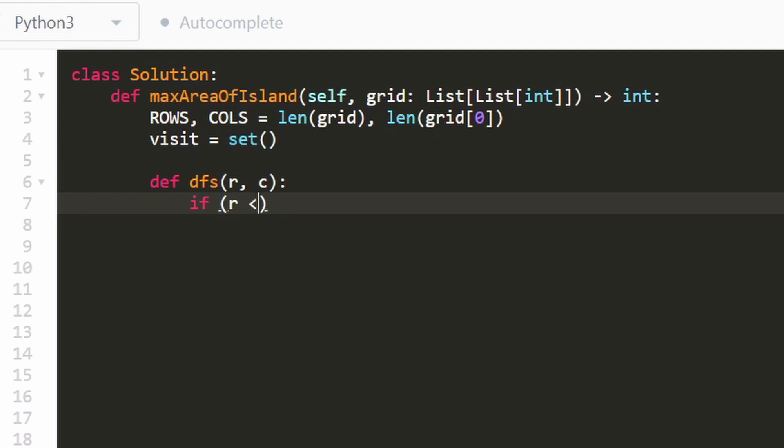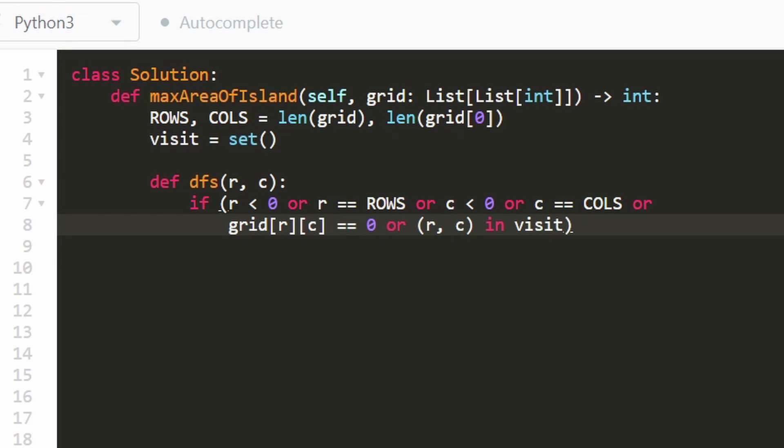One base case is if we go out of bounds. How do we determine that? Well if row is less than zero or row is too big, it'll be too big if it's exactly equal to the number of rows that we have, or the same thing with the column if it's less than zero or it's equal to the number of columns. And there's two other cases remember. One is if we reach water. We don't want to run DFS on water. So if the grid row column position is equal to zero and last but not least we don't want to revisit the same position. So if the row column pair is already inserted in our visit hash set then we don't want to revisit it. So in all of these cases what do we want to return? Well remember our DFS is trying to calculate the area of every island. In this case we didn't find an island so we want to return zero.